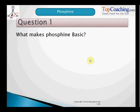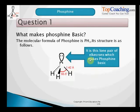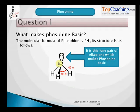What makes Phosphine basic? The molecular formula of Phosphine is PH3. It has phosphorus and three hydrogen atoms. It is the lone pair of electrons on phosphorus which makes Phosphine basic. To have a basic character, we need to have electrons, and it is this lone pair which gives Phosphine its basic character.